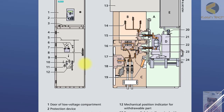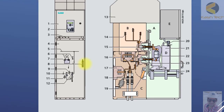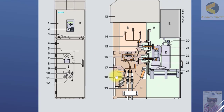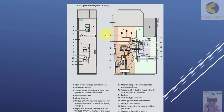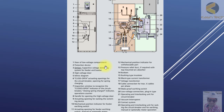I will open up one switchgear panel and explain in detail the mimic and the internal components. Here you can see the VCB is shown at point number 22, and I will be explaining in detail all these points.